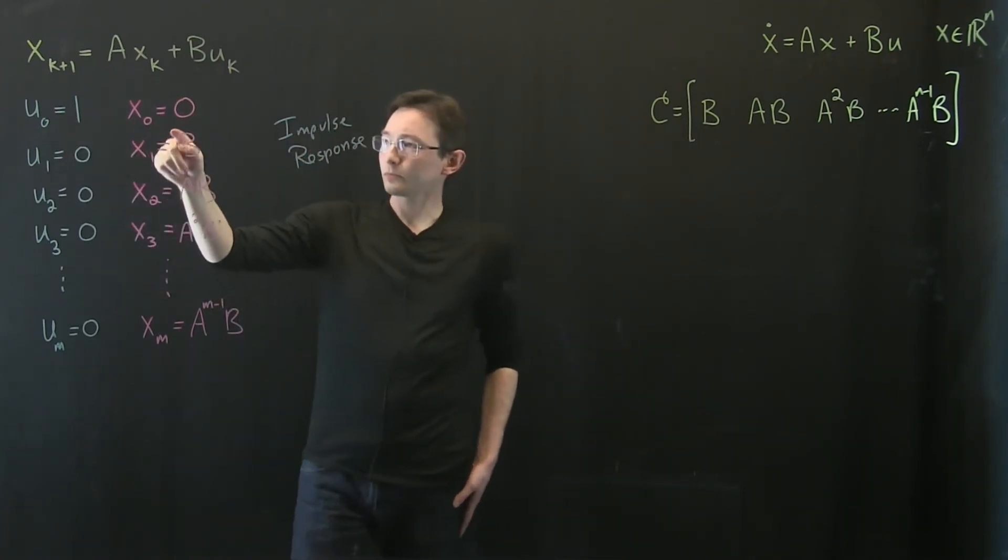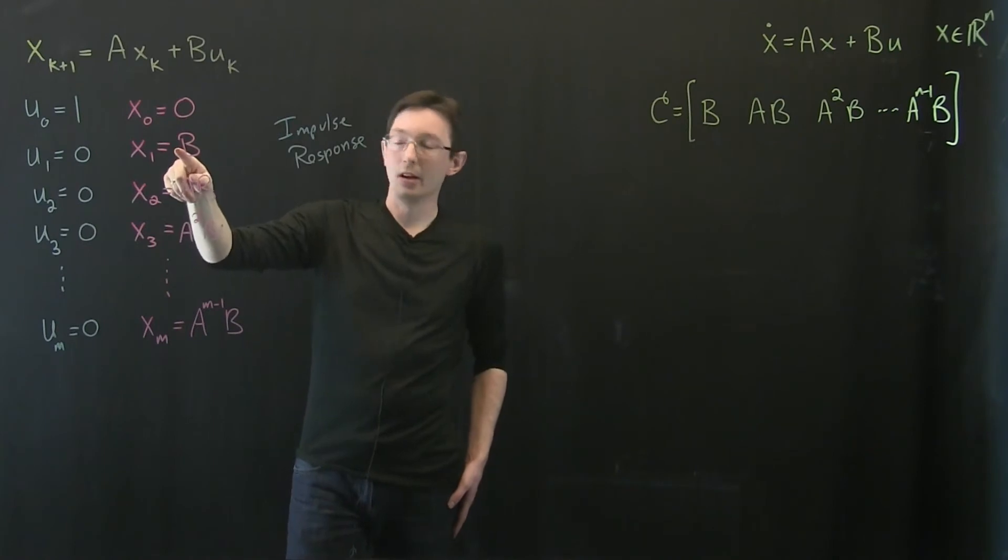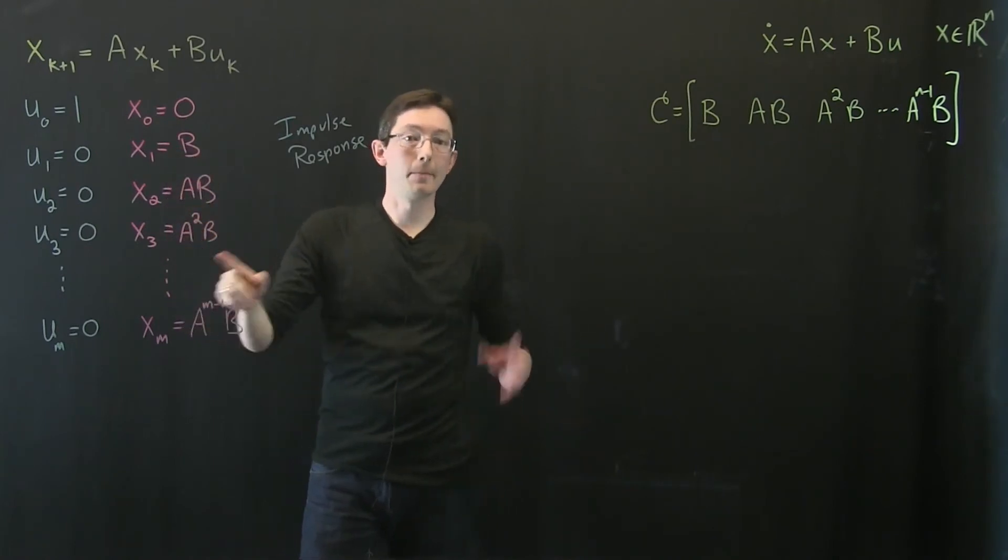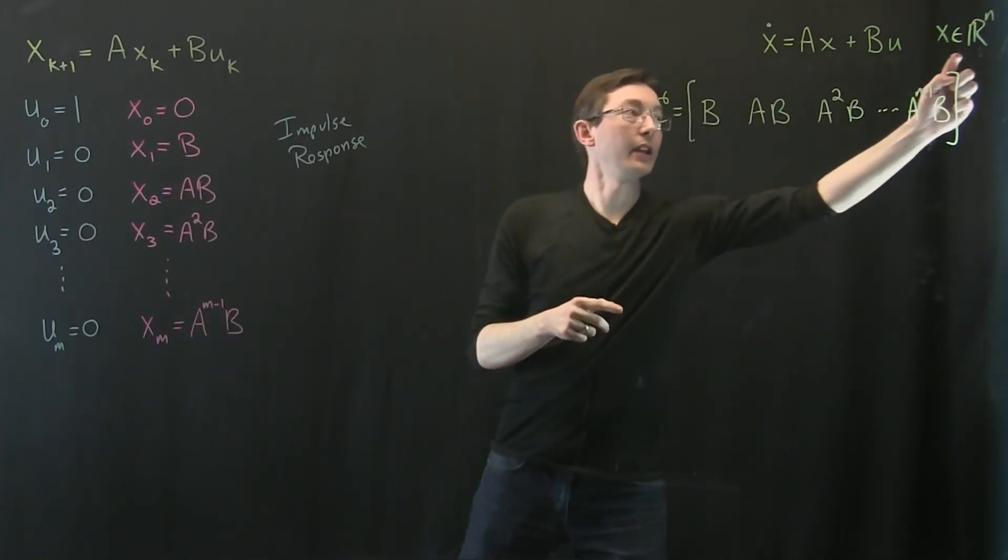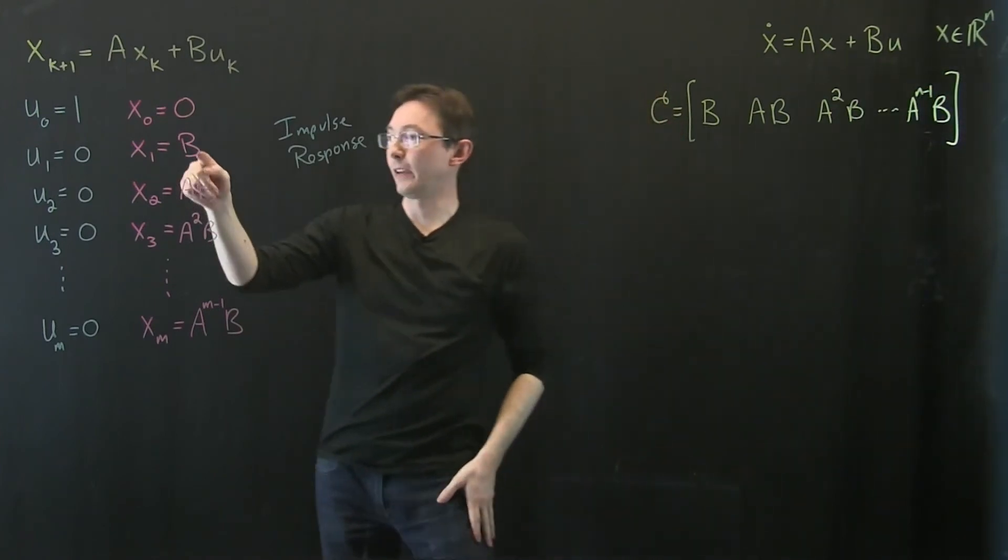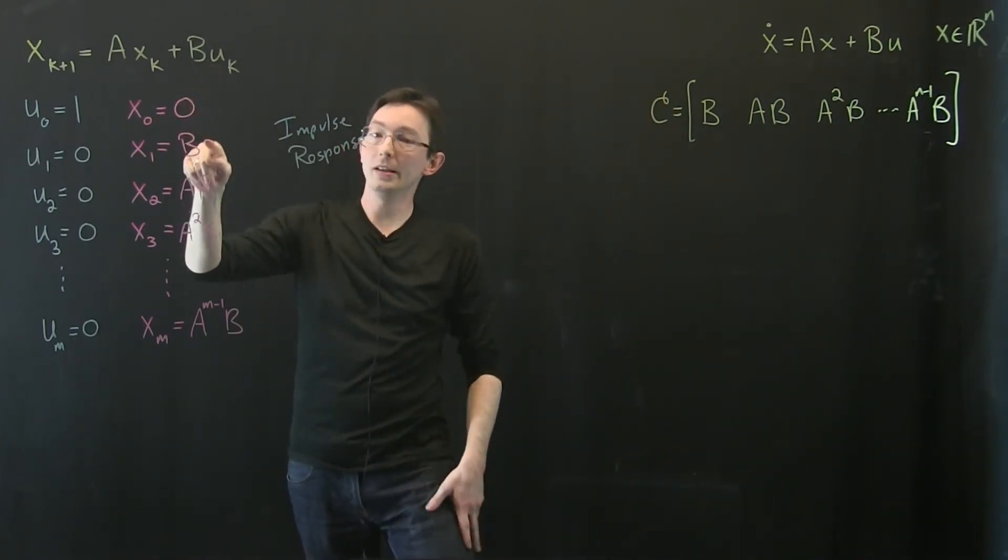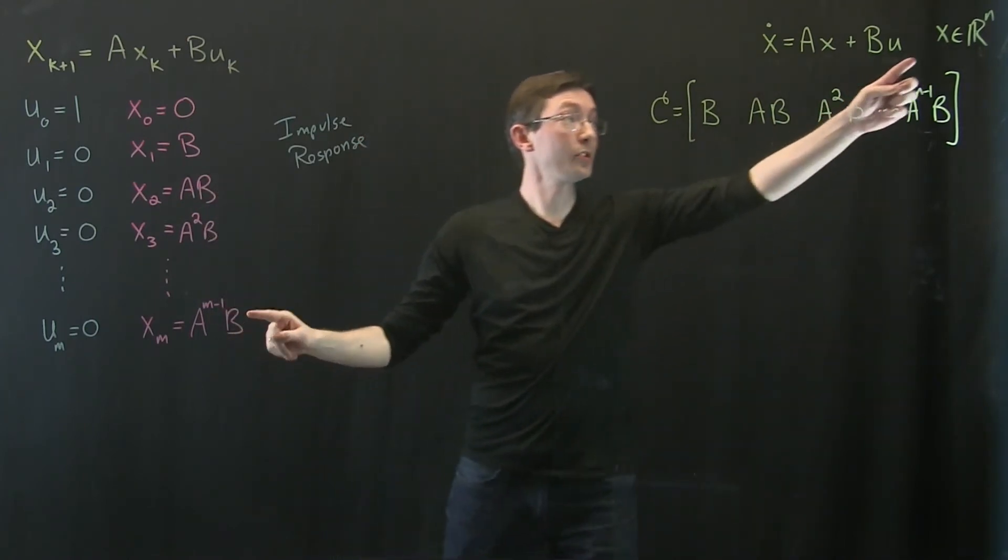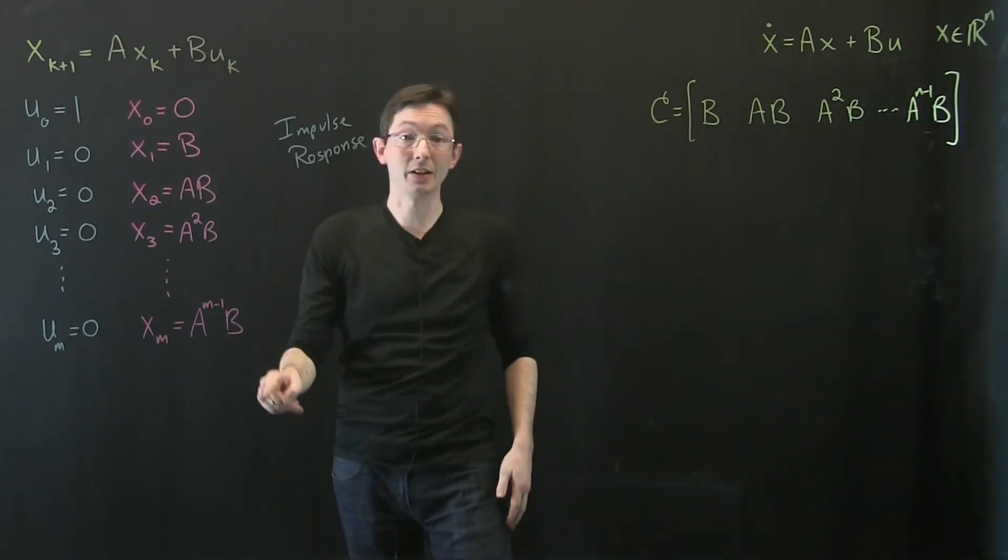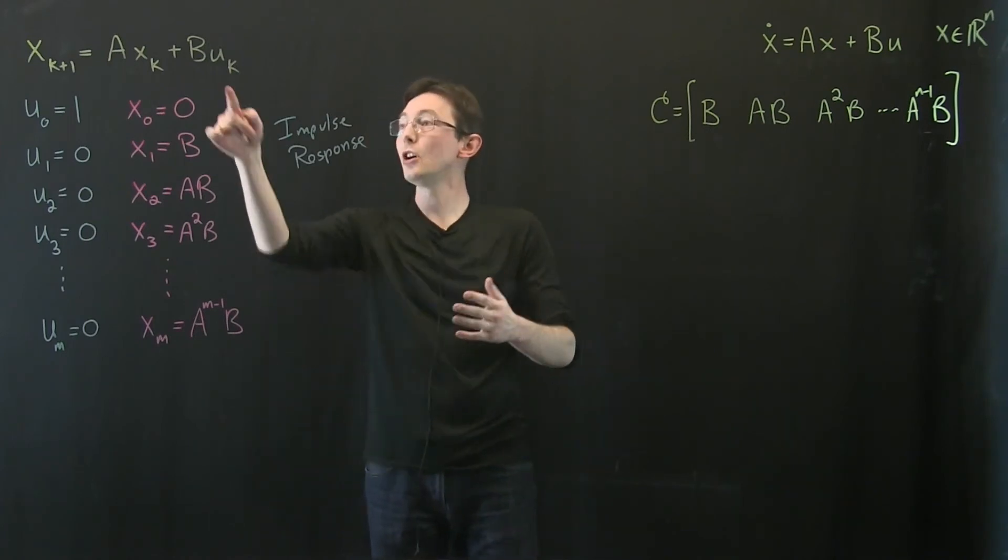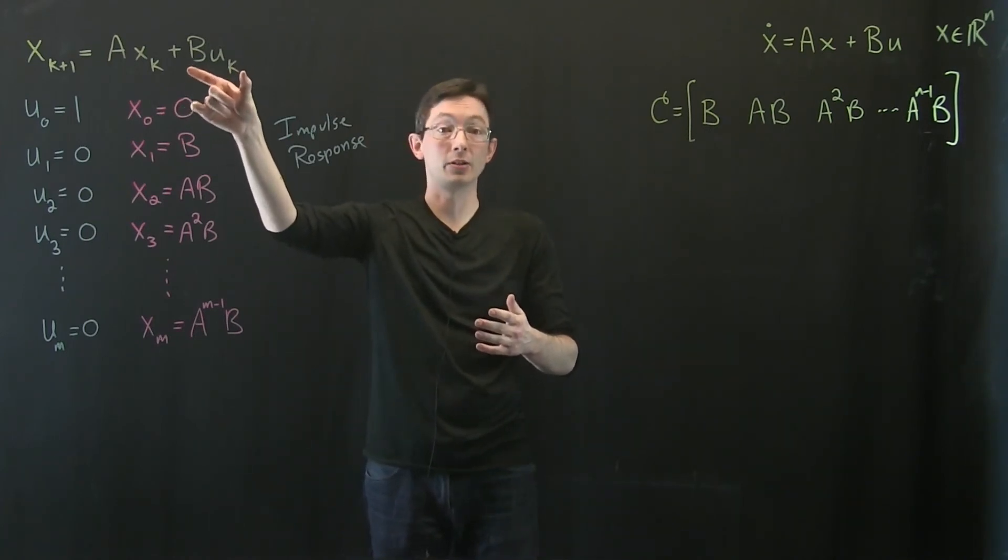I want to know that this input rings through the system and touches every state in Rn. If I hit my system with an impulse in u and it rings through the system and there are some directions in state space that are not touched by that b input, then there's no way I can possibly reach them with control.